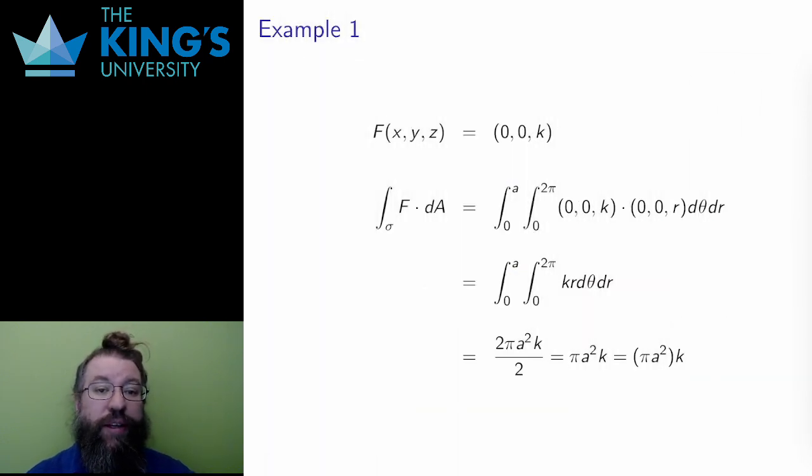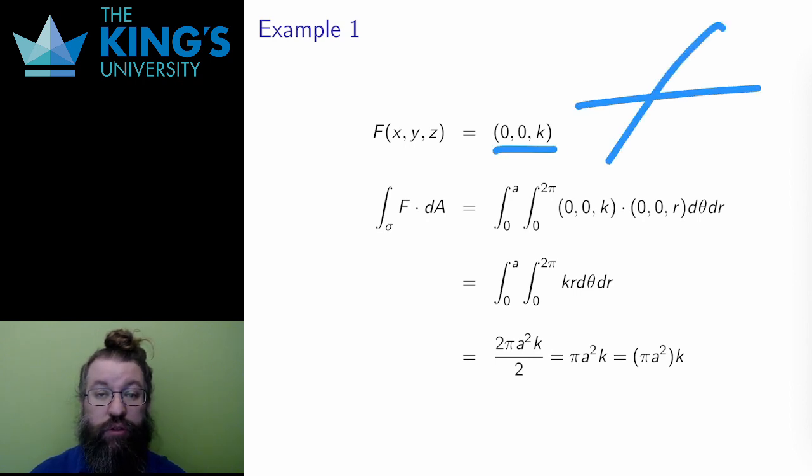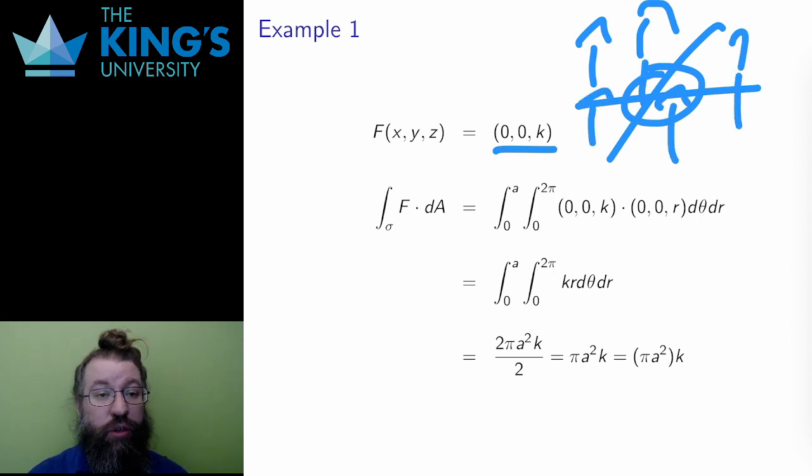Alright, here is a field. This is a constant field with a vertical direction. How much does this field pass through the disk? What's the measure of the interaction? That's what a flux integral calculates.